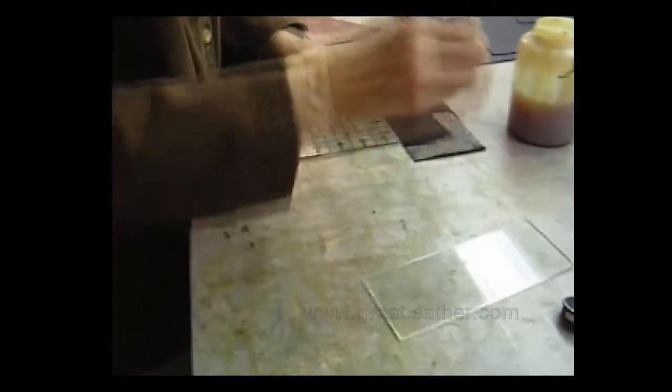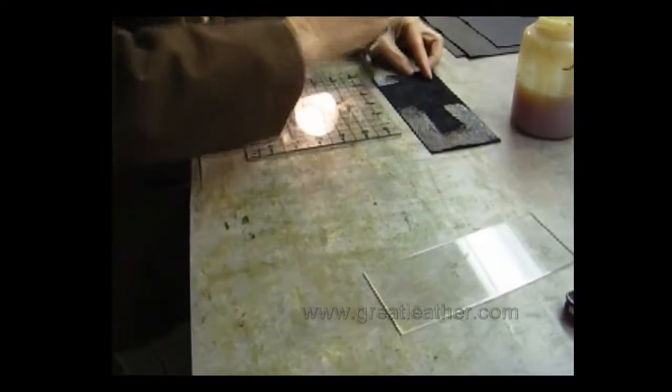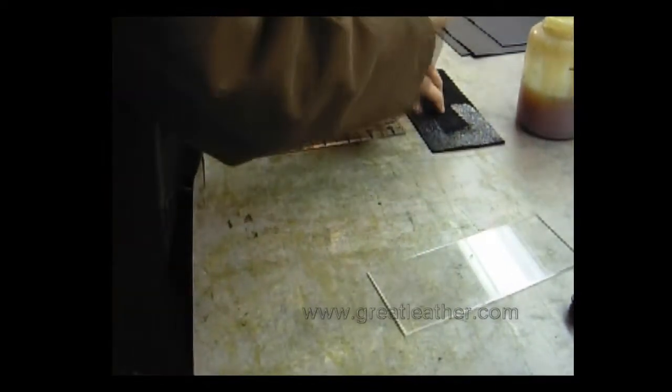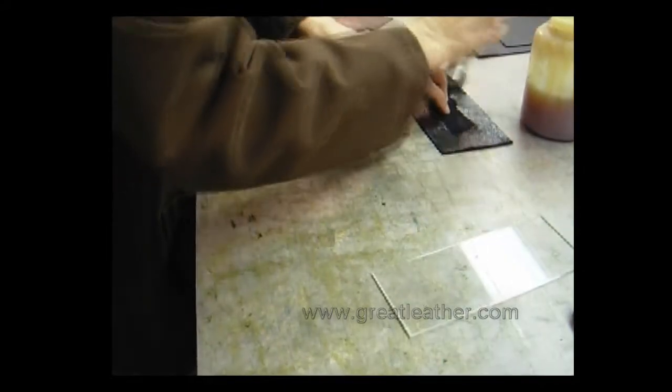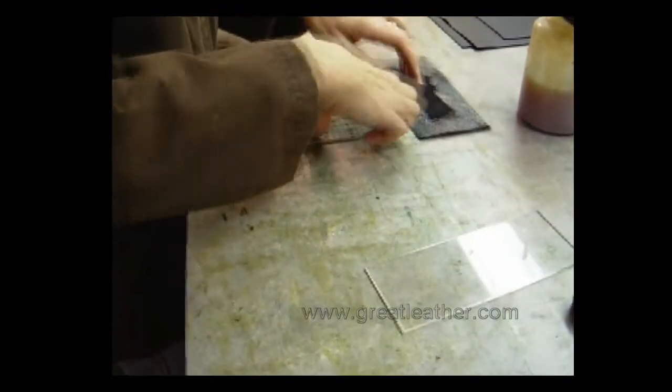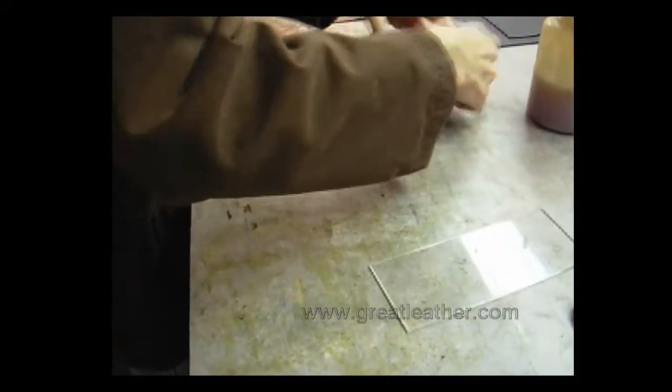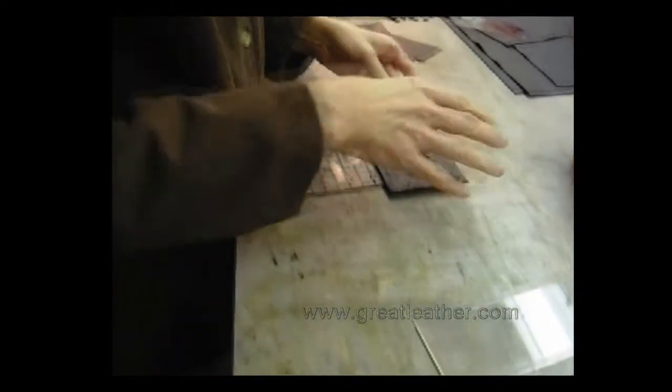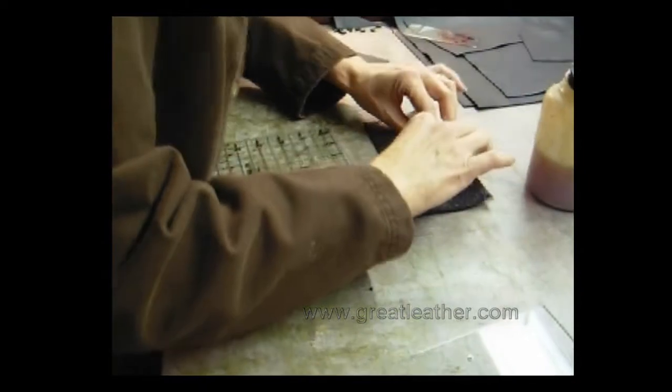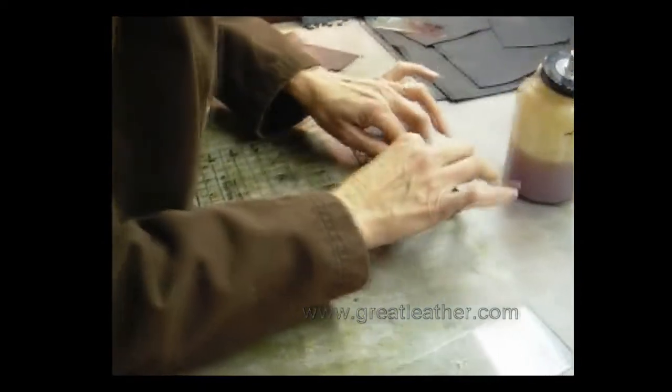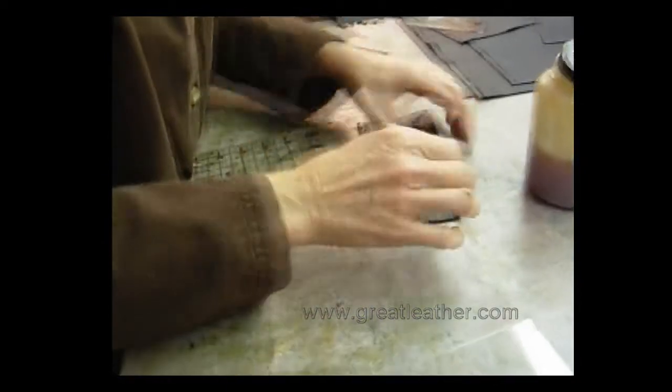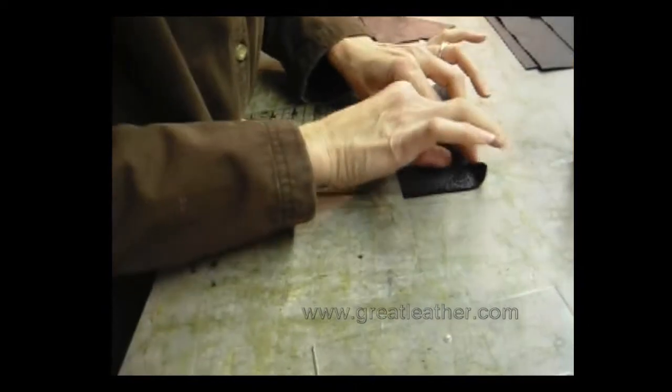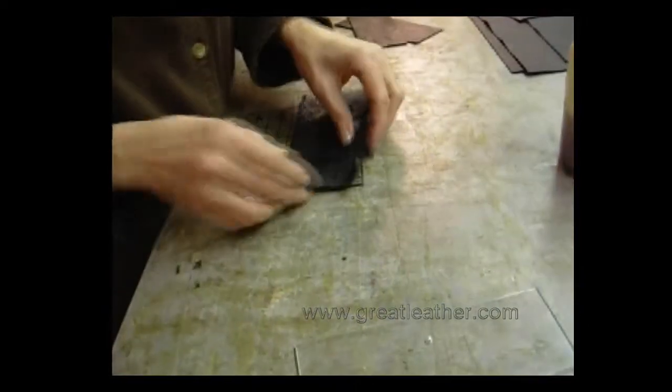Okay, this is how we make a pocket flap. I'm going to glue the edges and we're gonna turn it over a little bit and then it's square.